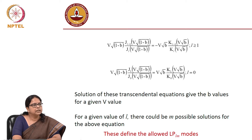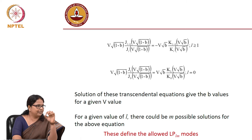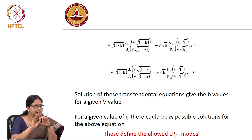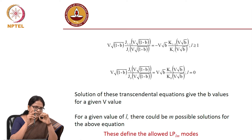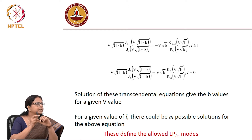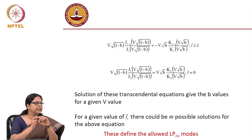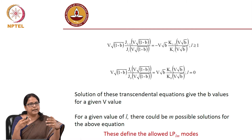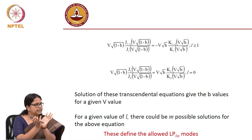LP stands for linearly polarized. Why do we call it linearly polarized? A fiber has circular symmetry. At the moment we are assuming that no direction of polarization is a preferred direction. In terms of degeneracy, it means that the light coupled into the fiber or the mode supported by the fiber could be of arbitrary polarization. Any arbitrary polarization can be resolved into two orthogonal polarizations, which means that each of these LP_LM modes can have two orthogonal polarizations supported.